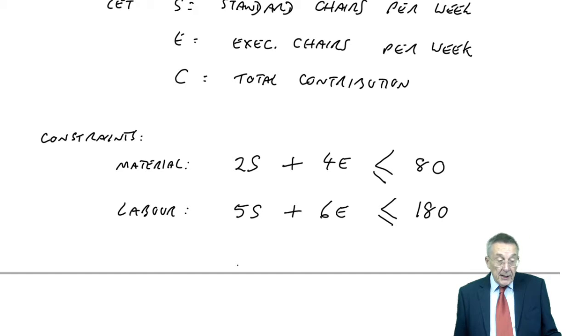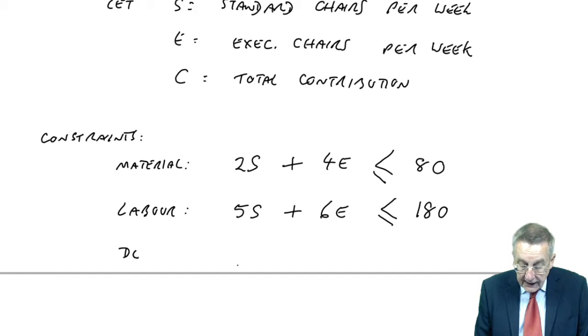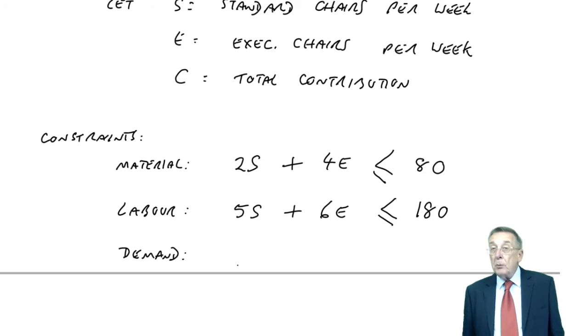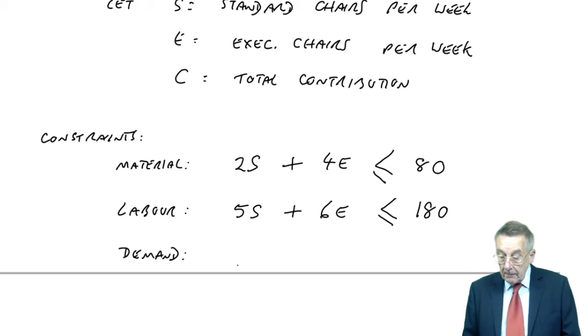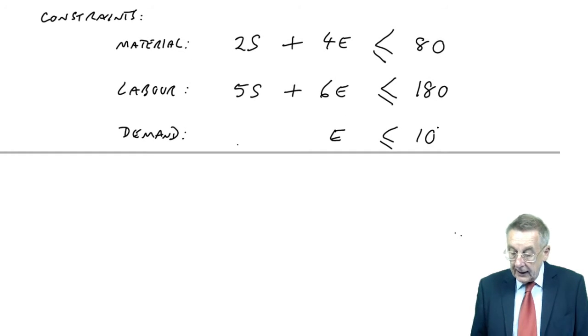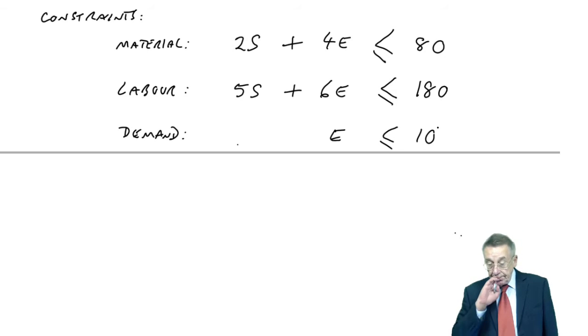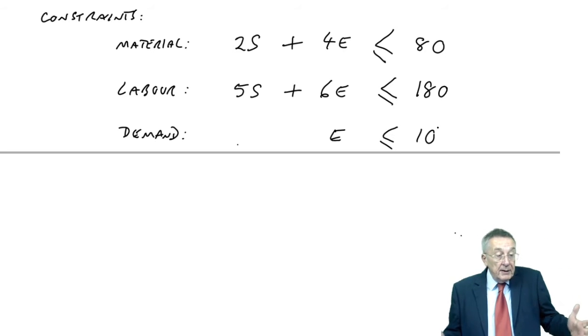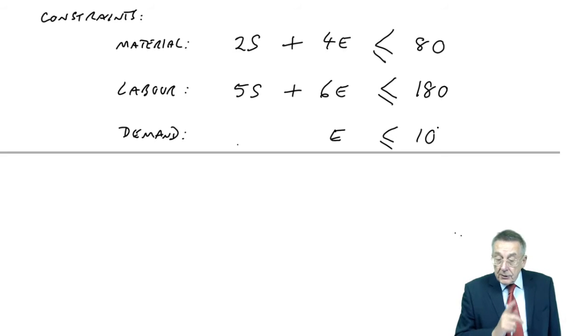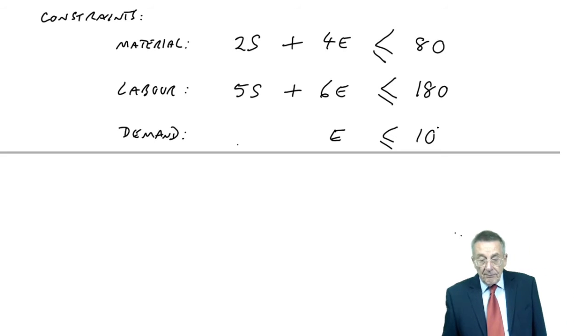What else? Demand for standard chairs is unlimited. So, any answer, you could end up with for S. However, executive chairs, the most we can sell is 10. And I said earlier, it doesn't mean we have to produce 10. But there's certainly no point in producing more than 10. So, E, the executive chairs, our final answer, it must be less than or equal to 10. So, I hope not too much problem there. There could be any number of constraints on us. However, just two more, which are fairly automatic.